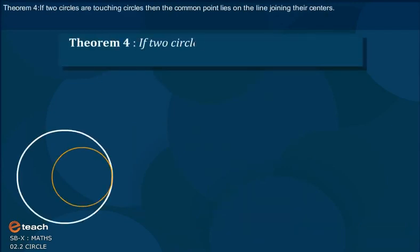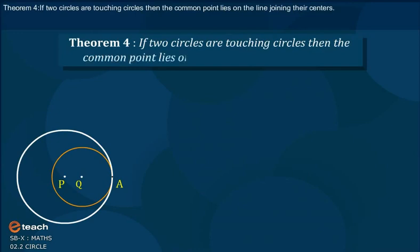Theorem 4: If two circles are touching circles, then the common point lies on the line joining their centers.